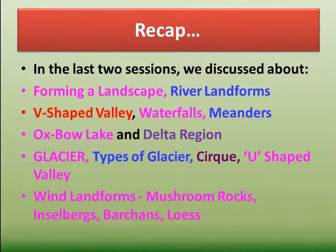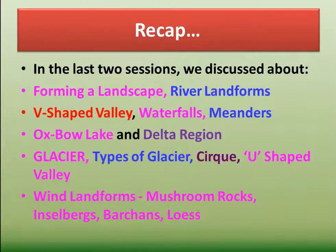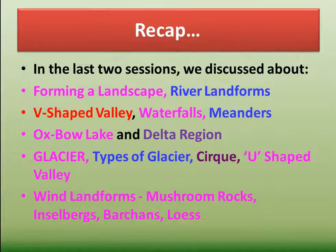In the last two sessions we discussed about the landforms produced by running water. The water flowing from its source to the river mouth along a definite course is called a river. The place of origin of the river is known as the source — it can be a mountain or a hill. The place where it joins a lake, sea, or ocean is called the river mouth.